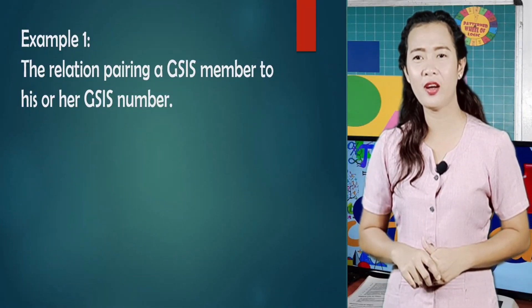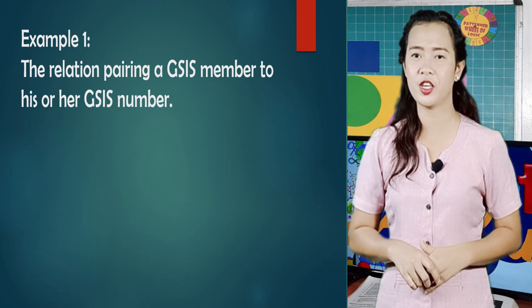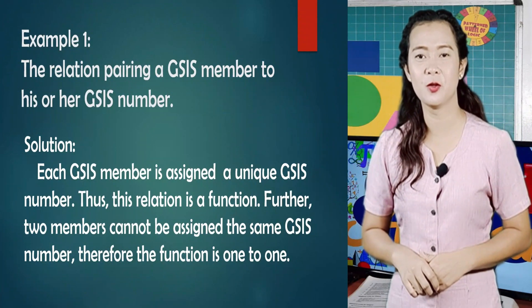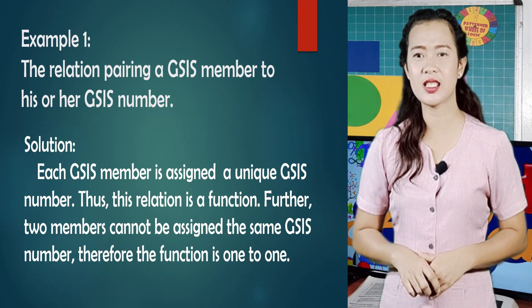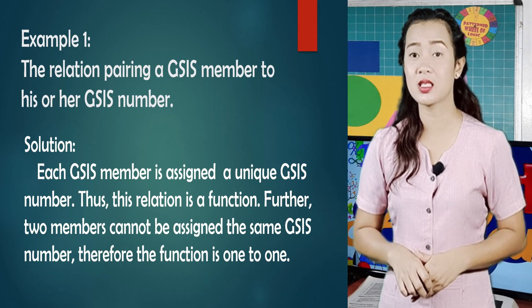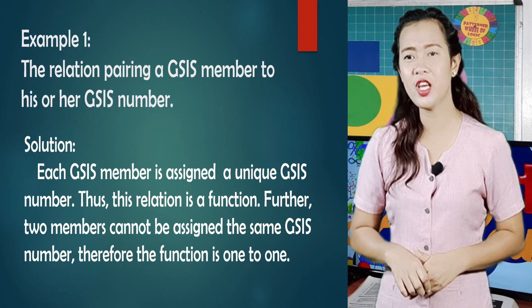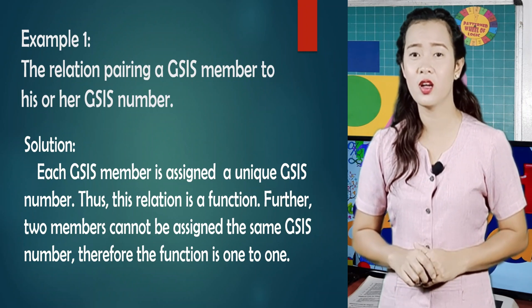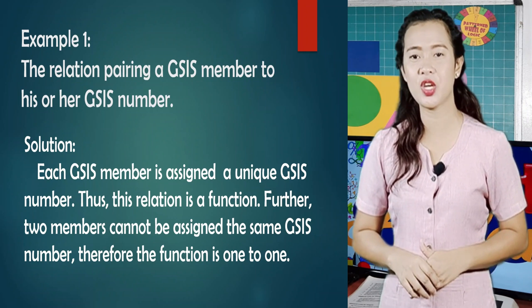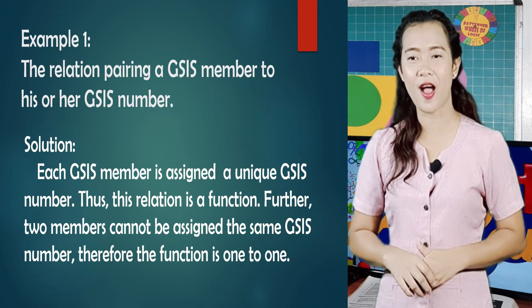There are a lot of real-life applications of a one-to-one function. Now, determine whether the given relation is a function, and if it is a function, determine whether it is one-to-one. Example 1: The relation pairing a GSIS member to his or her GSIS number. Each GSIS member is assigned a unique GSIS number. Thus, this relation is a function. Further, two members cannot be assigned the same GSIS number. Therefore, the function is one-to-one.